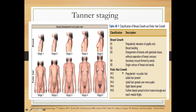For pubic hair Tanner staging: pH1 is pre-pubertal — no pubic hair. pH2, labial hair is present. pH3, labial hair spreads over the mons pubis. pH4, labial hair with slight lateral spread. And pH5, further lateral spread of pubic hair to form an inverse triangle reaching the medial thighs.